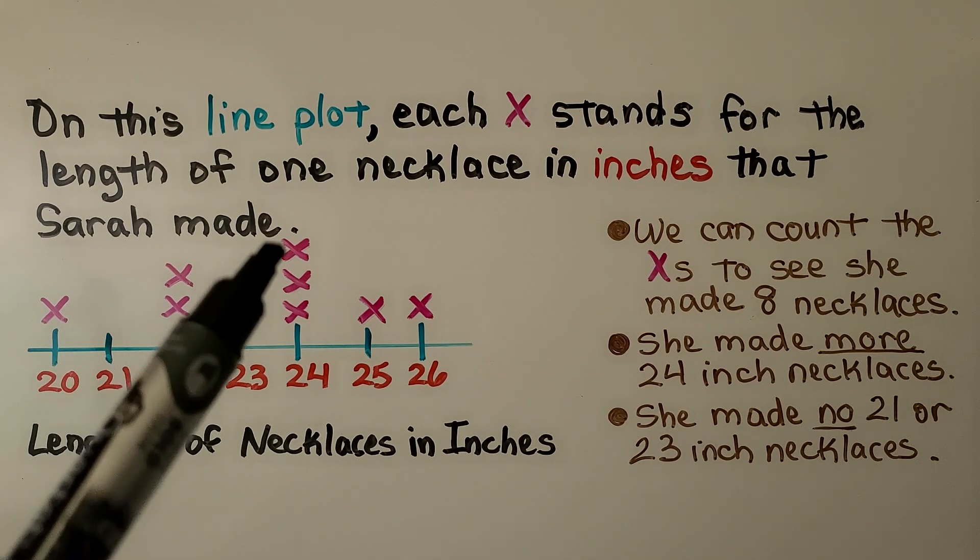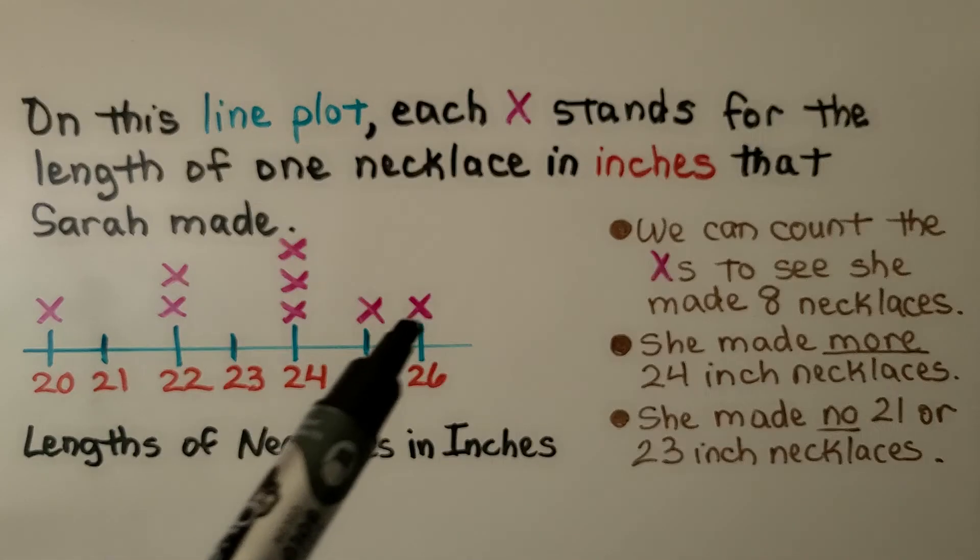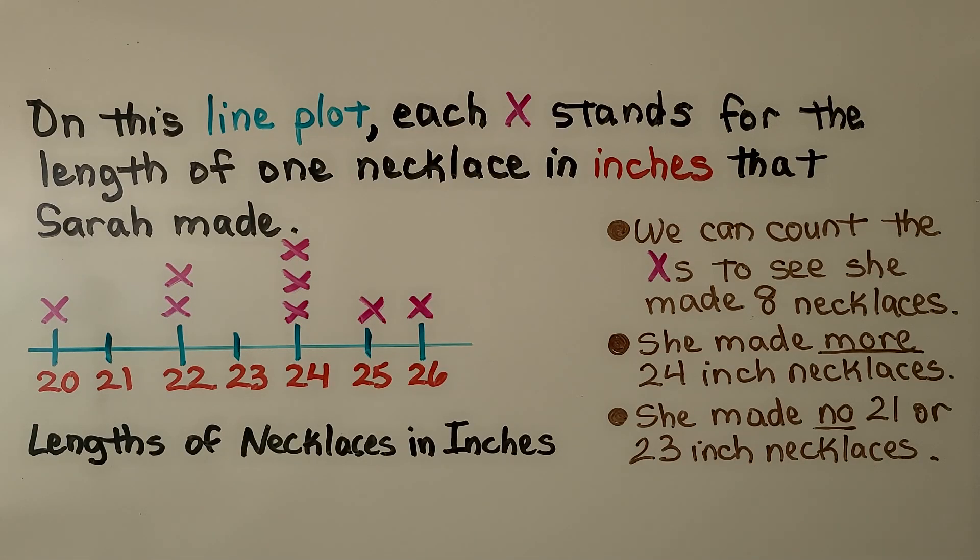We can count the x's to see she made eight necklaces. We can see she made no 21 inch or 23 inch necklaces. But we can easily see which one she made the most of because it has three x's over the 24 for 24 inches.